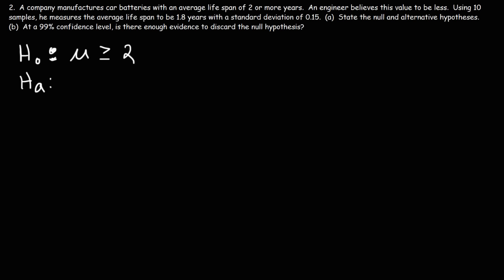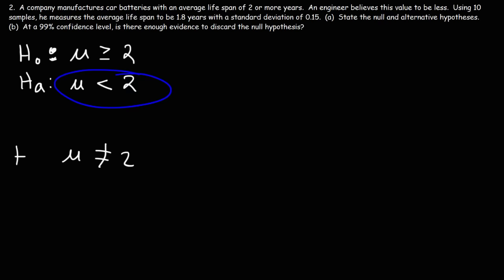For the alternative hypothesis, we look at the engineer — he believes this value to be less, so the alternative hypothesis is that the mean is less than two years. Now, what type of test are we dealing with? If the alternative hypothesis said 'does not equal two,' it would be a two-tail test. But since the mean is less than two, it's a one-tail test — specifically a left-tail test.